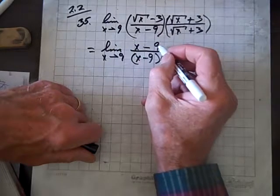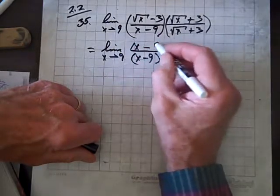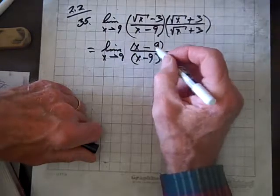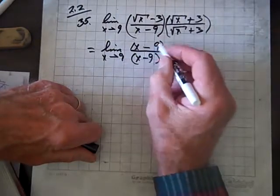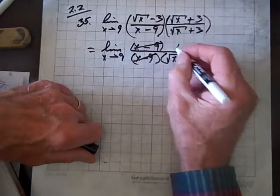Notice, these x minus 9's, these are factors, I can put parentheses there if you like, and this is a factor, this is a factor up top, they divide out. We just have a 1 here.